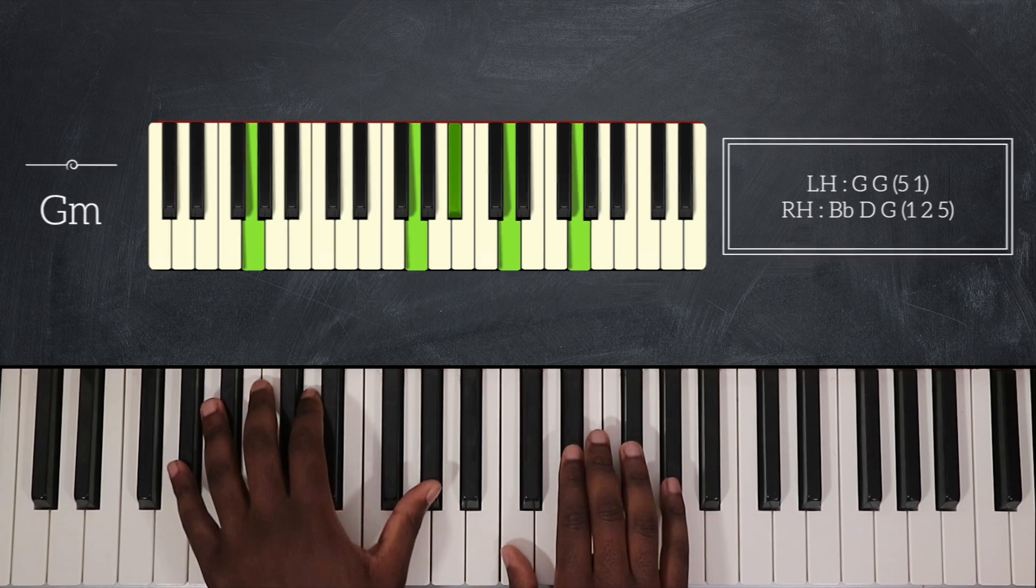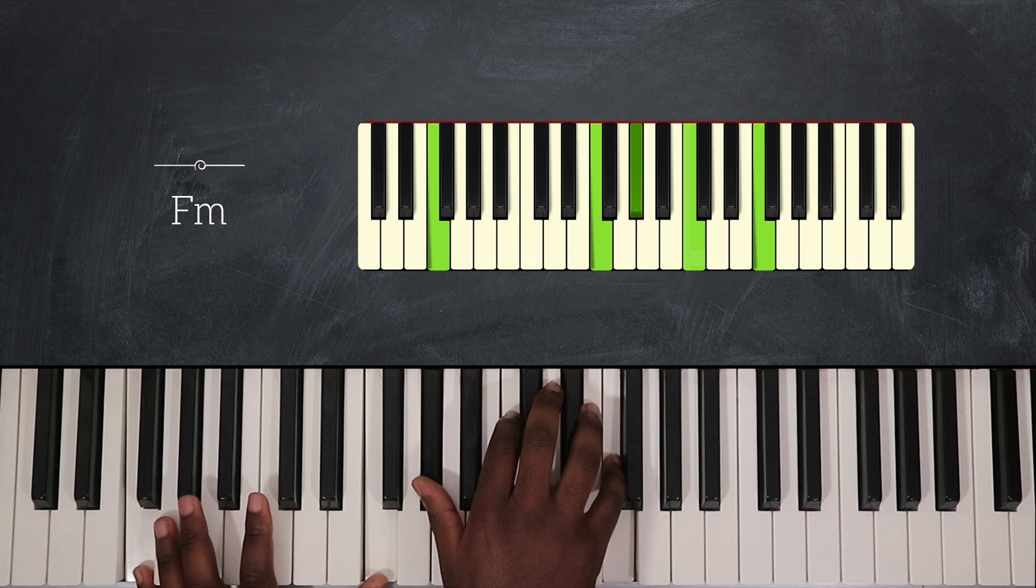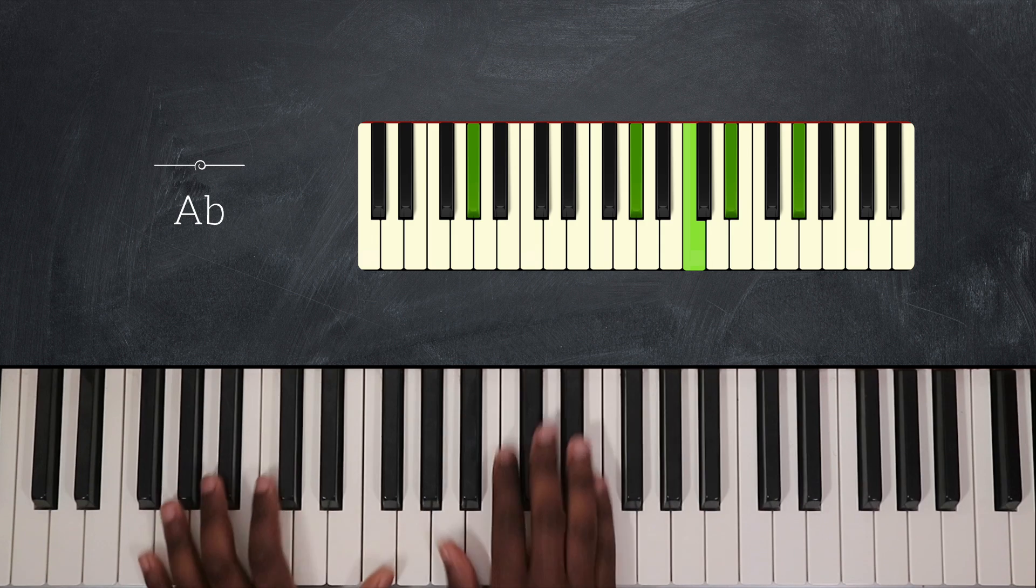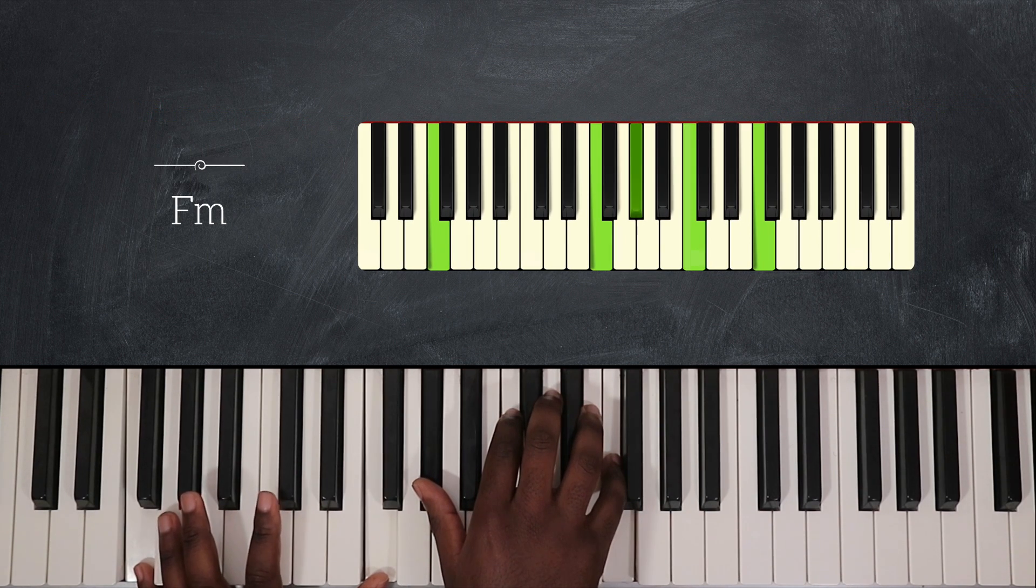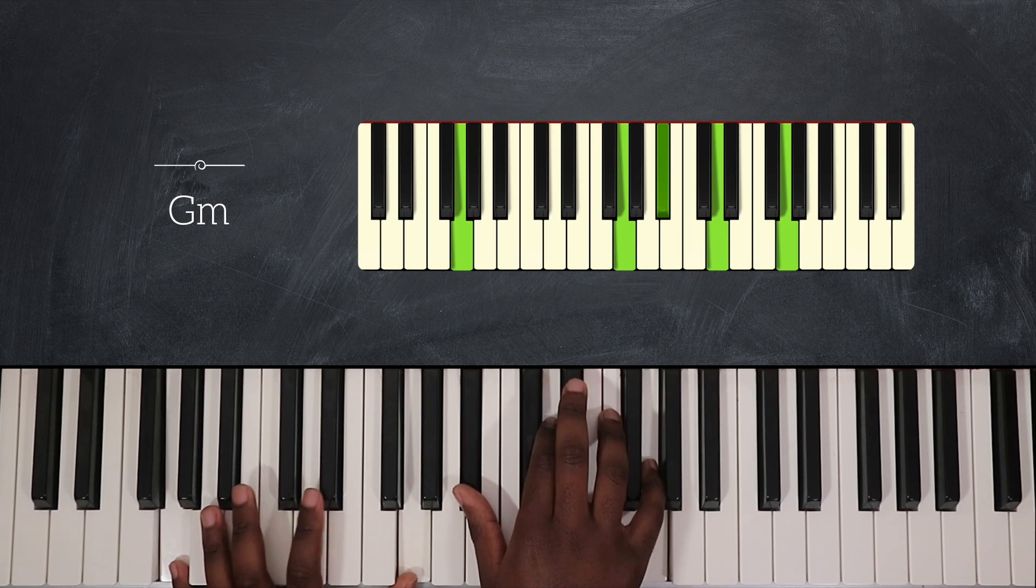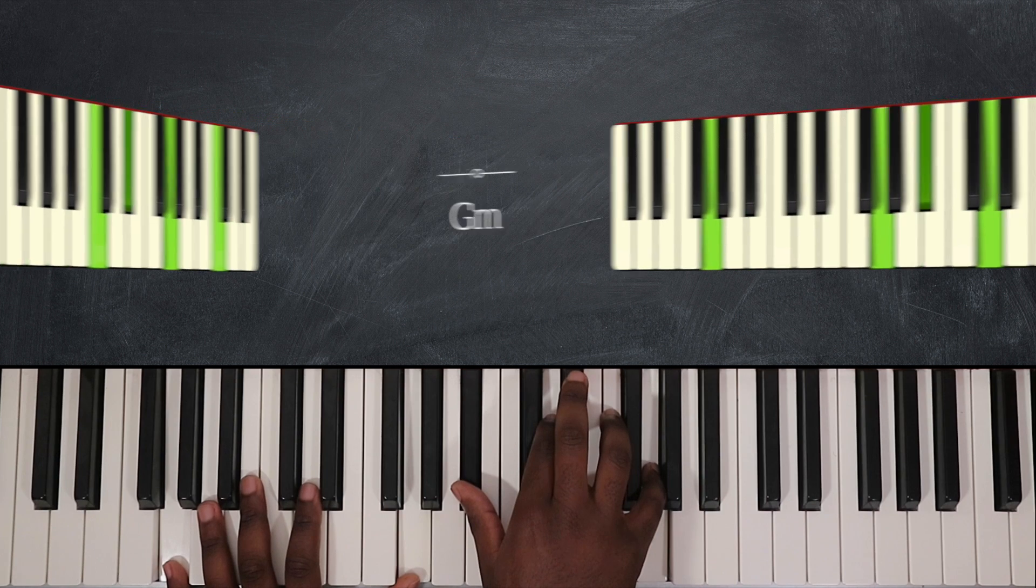So you're going to play like this: Ab, Fm. Then you're going to repeat it. And then Cm, Gm. Once again, Cm and Gm.